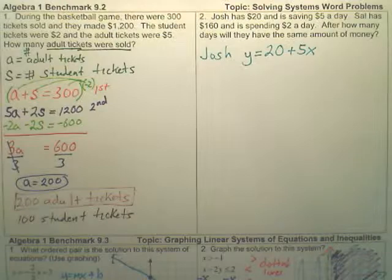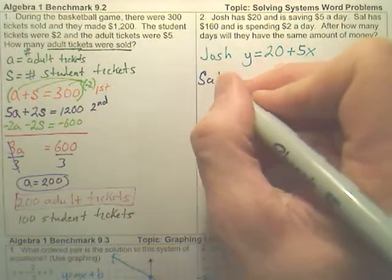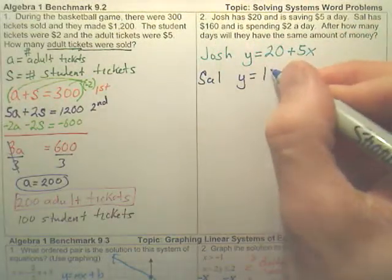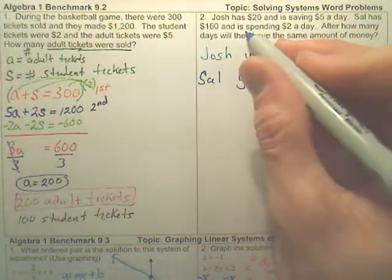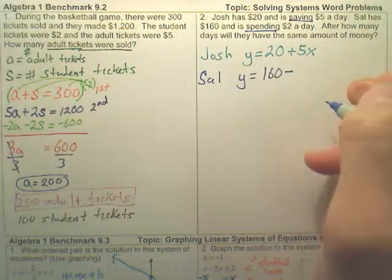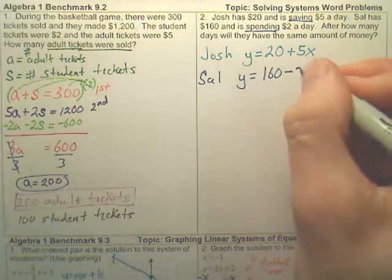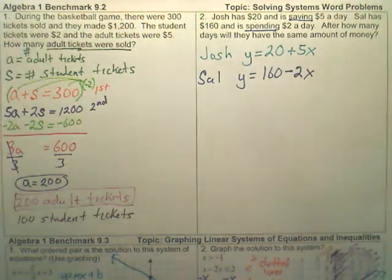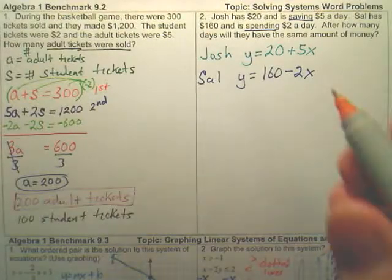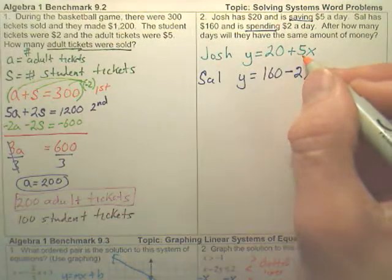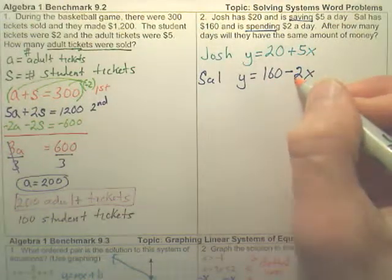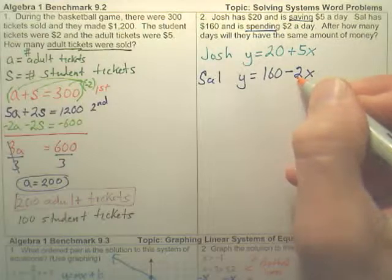Then we have the next person, Sal. Sal has how much? He has $160, but he's spending. One saving, one spending. Spending would be minusing how much a day? $2 a day. He must be buying some sort of candy or something, or soda every day. So Josh has $20, but he's making money. He basically gets some chores around the house or something. And this guy has a certain amount of money, but he's spending it every day buying like a soda or candy or something.